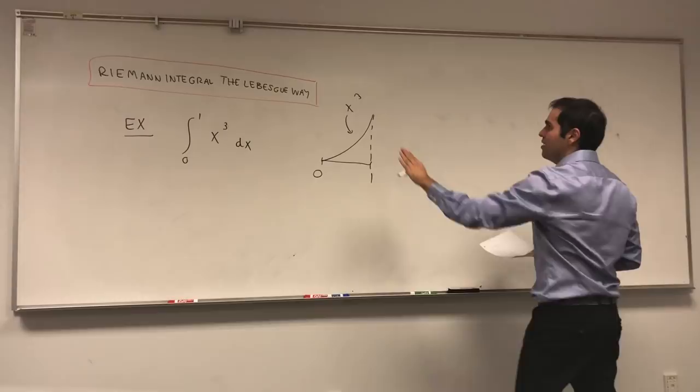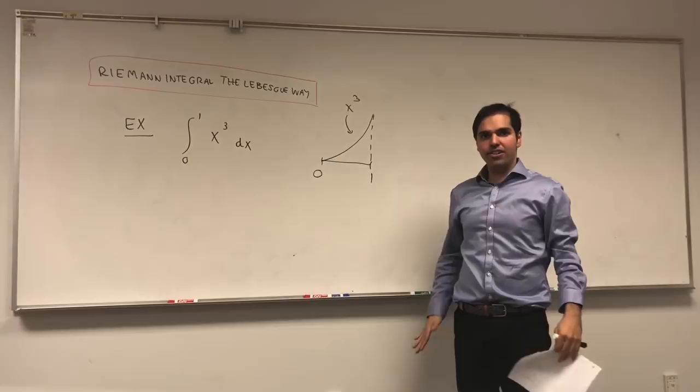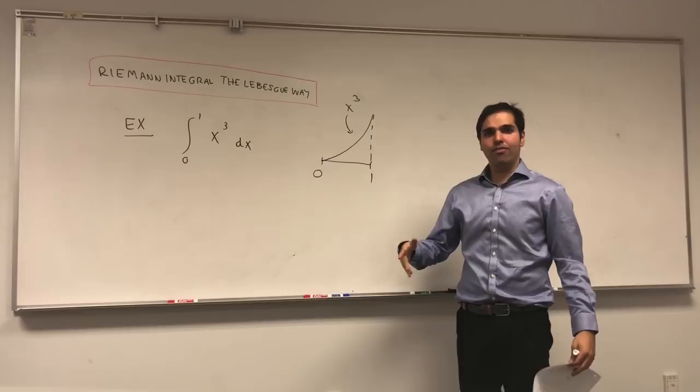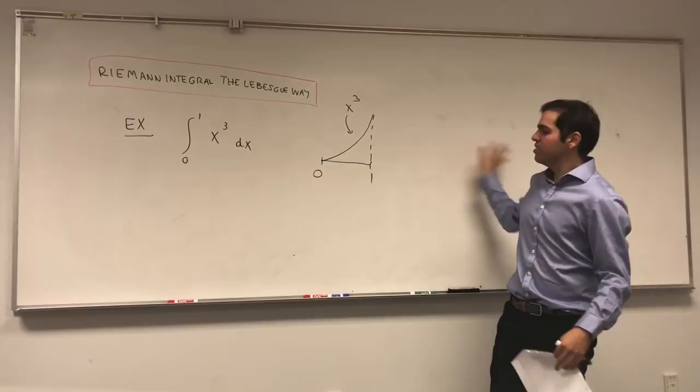So, remember the Lebesgue integral, how it works. You start with step functions, indicator functions. Then you have your simple functions, which are limits of linear combinations of indicator functions. And then you take limits of those simple functions. And then the next step is functions which are zero outside of some sets. And then you have general functions, positive and negative.